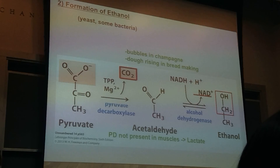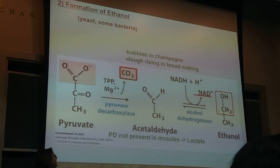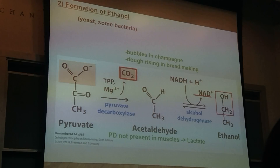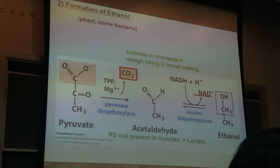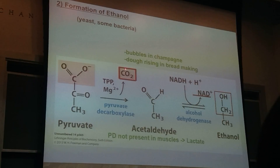If you can't process acetaldehyde well using alcohol dehydrogenase to make ethanol, you can have flushing and other responses. People who have a weak allele of alcohol dehydrogenase — making the fermentation that converts it to ethanol less effective — can't process pyruvate into ethanol as well, and this can actually build up and be kind of toxic. We all know this: beer, champagne, wine — all of these are results of fermentation to produce the ethanol, and the CO2 you see as the bubbles.